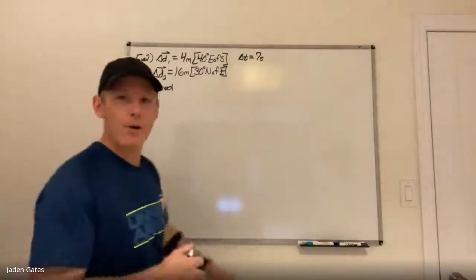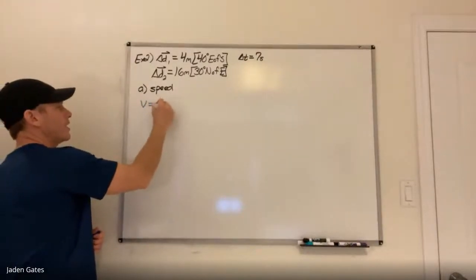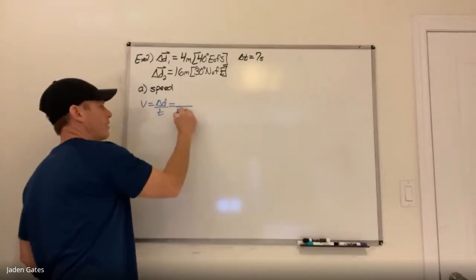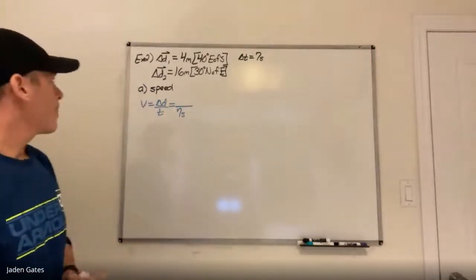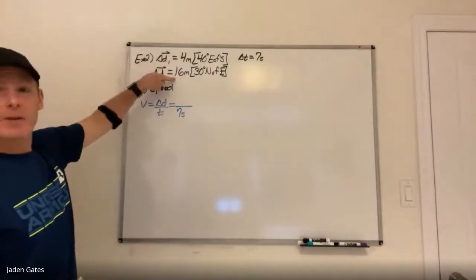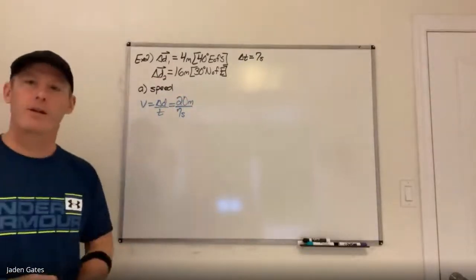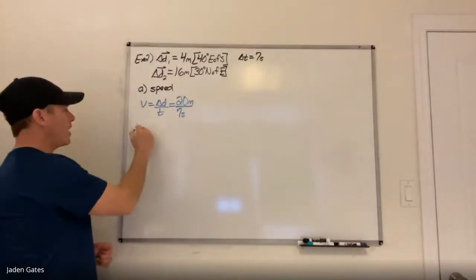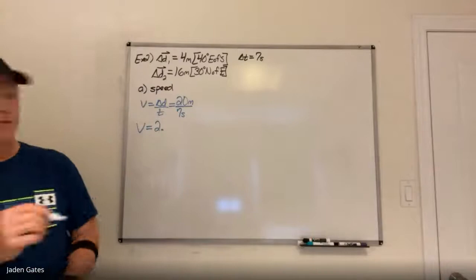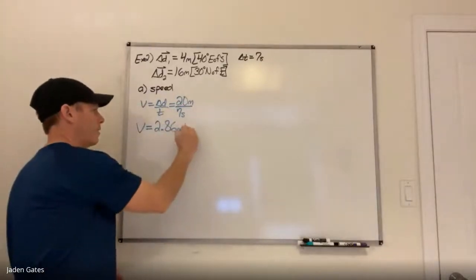For speed — the easy one first — we use V equals delta D over T. Time is seven seconds. Distance is how far the person ran: they ran 4 meters in one direction and 16 meters in another, so total distance is 20 meters. Speed equals 20 divided by 7 equals 2.86 meters per second.